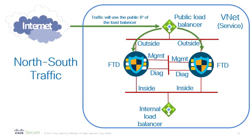For inbound connections, sometimes called north-south traffic, the traffic hits the public IP address of the load balancer and is forwarded to one of the firewalls. The firewall then does the inspection and sends the traffic to the target server.